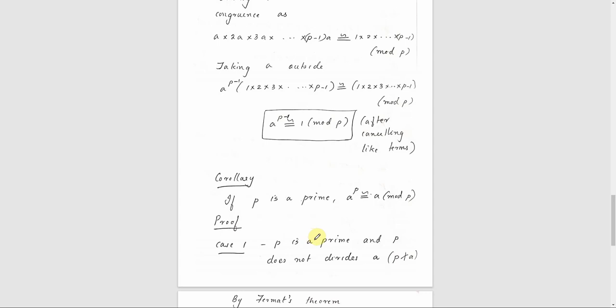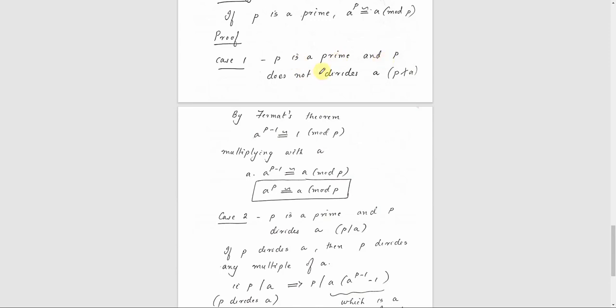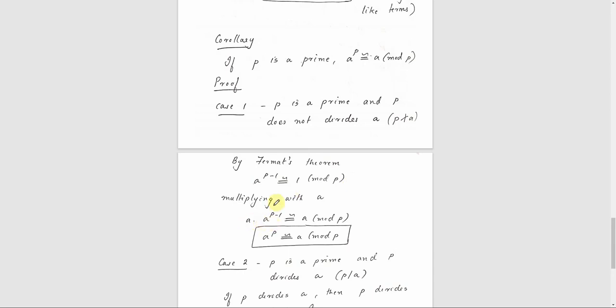We will consider the corollary proof in two cases. First case: P does not divide A. Second case: P divides A. In the first case, P is prime and P does not divide A. We apply Fermat's theorem: A raised to P minus 1 is congruent to 1 mod P. Multiplying both sides by A: A into A raised to P minus 1 is congruent to A mod P, which gives A raised to P is congruent to A mod P. This is the first case result.